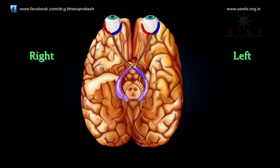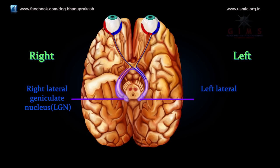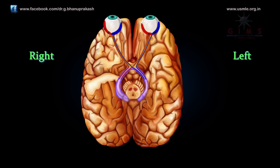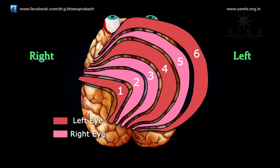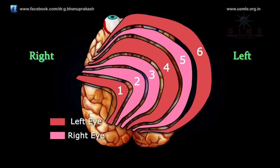The lateral geniculate nucleus serves as the primary relay nucleus for visual processing by the cerebral cortex. The right lateral geniculate receives information from the left visual field, the nasal left retina, and temporal right retina, while the left lateral geniculate receives information from the right visual field, the nasal right retina, and the temporal left retina. The spatial relationships among the ganglion cells in the retina are maintained in their targets as orderly representations, or maps, of visual space. The primate lateral geniculate nucleus has six layers, and input from the two eyes is maintained in separate layers within the LGN.